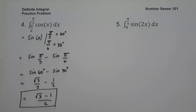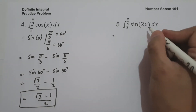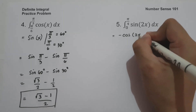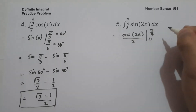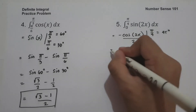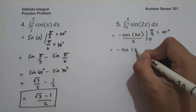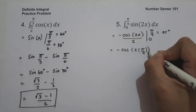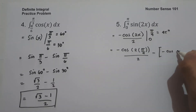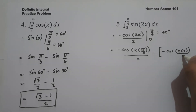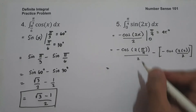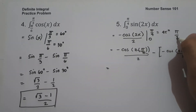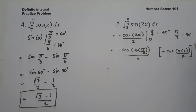On example number 5, what is the antiderivative of sine 2x dx evaluated from 0 to pi over 4? The antiderivative of sine 2x is negative cosine 2x divided by the derivative of 2x, which is 2, evaluated from 0 to pi over 4. Pi over 4 is 45 degrees. So this becomes negative cosine of 2 times pi over 4 over 2, minus negative cosine of 2 times 0 over 2. The 2 times pi over 4 simplifies to pi over 2, which is 90 degrees, and cosine 90 degrees is 0.